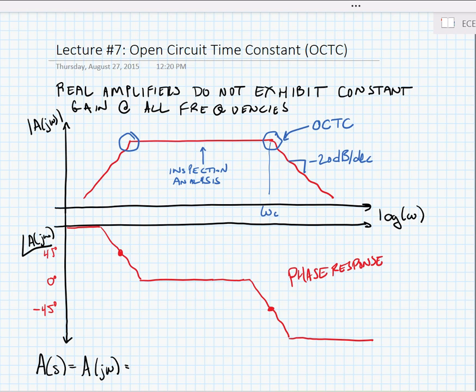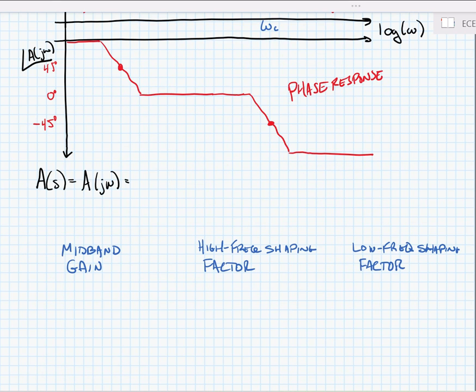In general, in order to find the frequency response we're going to find the amplitude as a function of s, or amplitude as a function of jω, will be the product of our mid-band gain. Now remember for our mid-band gain we find that with what we call inspection analysis.